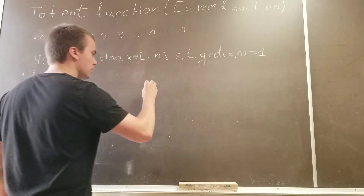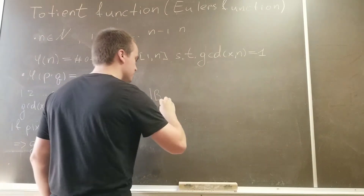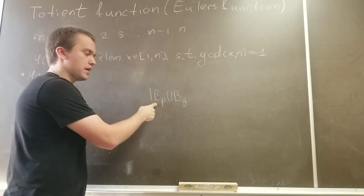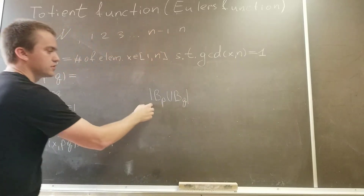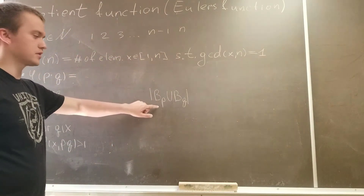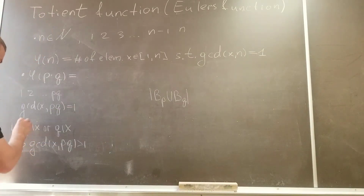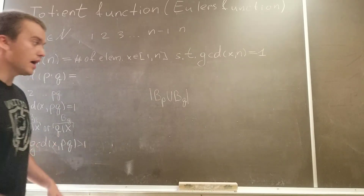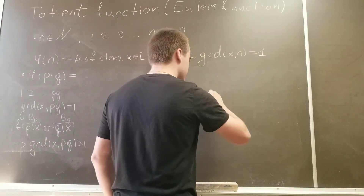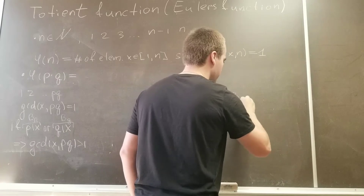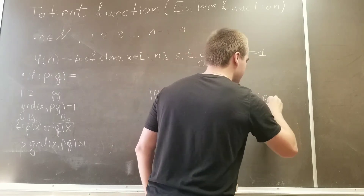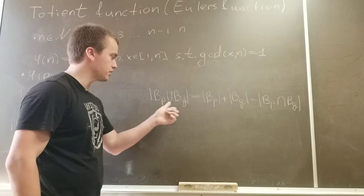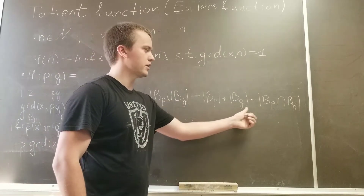What we want to find — let's name B(p) the number of elements divisible by p, and we want to find the number of elements divisible by p or divisible by q. So we want to find the cardinality of these two subsets. B(p) is the set of all numbers divisible by p, and B(q) is the set of all numbers divisible by q. By the inclusion-exclusion principle, the cardinality of the union is the cardinality of B(p) plus the cardinality of B(q) minus the intersection.